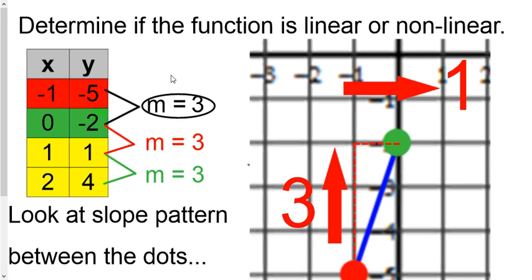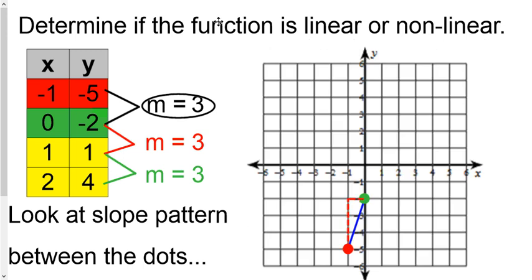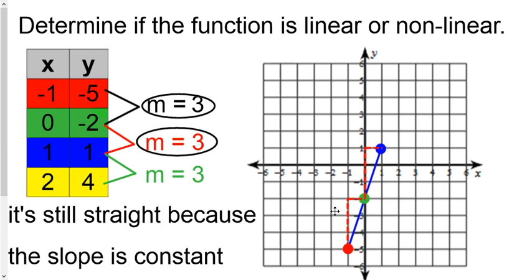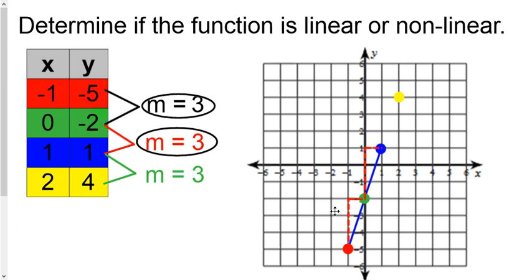That is the same slope between the red dot and the green dot that we found in the table — the graph matches up with what we did earlier. In order to keep this a straight line, the slope has to be constant. That means if you got three-over-one for your first slope — up three and to the right one — we need to keep going. Let's look at one, one: the line connects, and the pattern between the green dot and the blue dot is up three and to the right one. Same slope, constant.